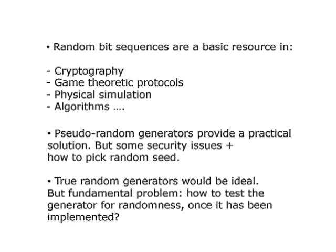So why do we want to do all this? Random bit sequences are used all over the place, but the requirements depend on the application. In cryptography, you care about not just randomness but also privacy, and same for game-theoretic protocols. For physical simulations, you don't care if the random numbers are secret, you just care that they are random enough. For many of these applications, pseudorandom number generators are sufficient, but there are security issues. Once you use a pseudorandom generator with strong security properties, your conditions on the seed become even more stringent, because it's not clear how much correlation in the seed will hurt you when you expand out the randomness. So true random number generators would be ideal.